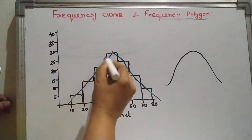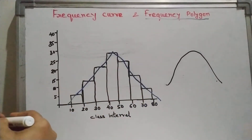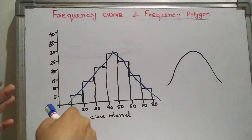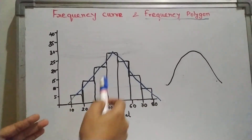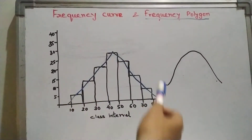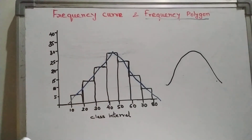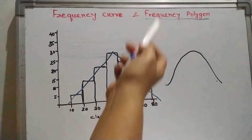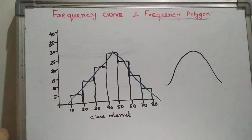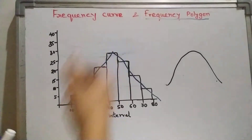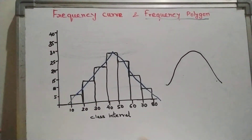If we join the points smoothly it is called a frequency curve; otherwise it is called a frequency polygon. Generally we get a frequency polygon because the data does not always peak in the middle with others lower — it may vary. So it depends on the data, and accordingly we draw either a frequency polygon or a frequency curve.